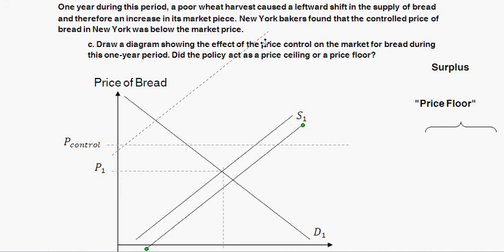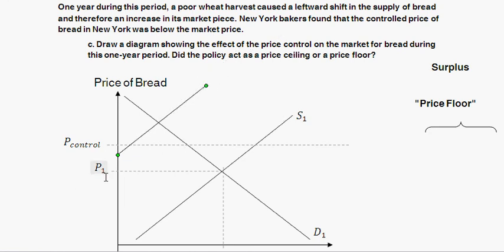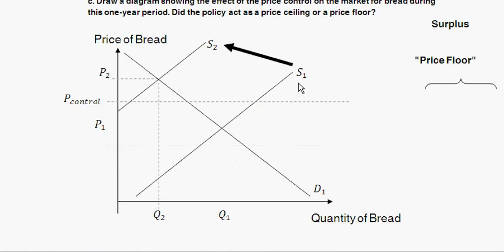A leftward shift in the supply curve from S1 to S2 results in a new equilibrium. The new equilibrium price P2 is higher than before, and the new equilibrium quantity Q2 is lower. However, the question asks us to focus on the effect of the price control — so now the controlled price is below the new equilibrium price. If prices were set naturally by supply and demand, we'd have this higher equilibrium price.